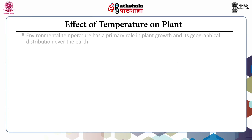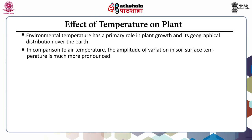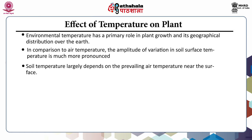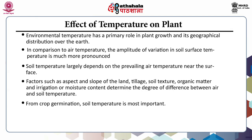Temperature has a primary role in plant growth and its geographical distribution over the earth. Compared to air temperature, the amplitude of variation in soil surface temperature is much more pronounced. Soil temperature largely depends on the prevailing air temperature near the surface; however, factors such as aspect and slope of the land, tillage, soil texture, organic matter, and irrigation or moisture content determine the degree of difference between air and soil temperature. From crop germination onwards, soil temperature is the most important factor and also affects plant growth processes.